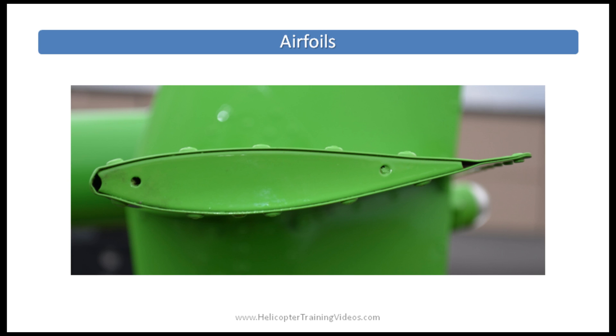Now we have a negative lift example. This is the horizontal stabilizer on a Robinson R-22 helicopter. This is to produce downforce in forward flight to stop the nose of the helicopter pitching too far forward.